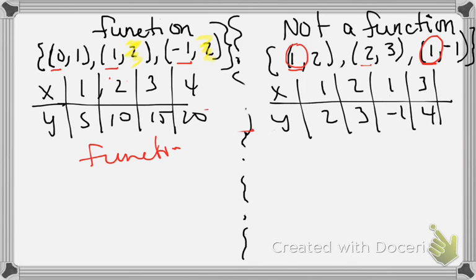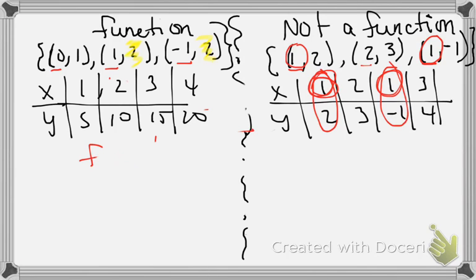In the non-function table, you have an x value repeating here and an x value repeating there. X's cannot repeat, so the table works the same way as with ordered pairs — if any x value repeats, it is not a function.